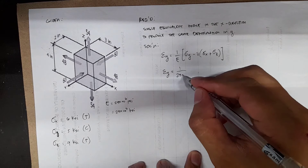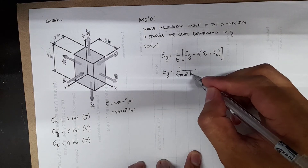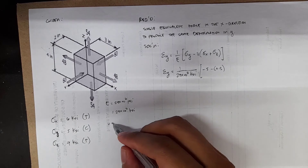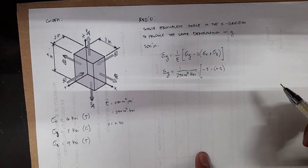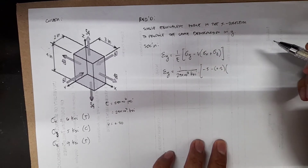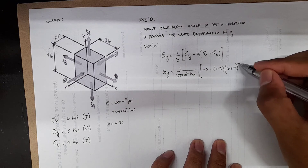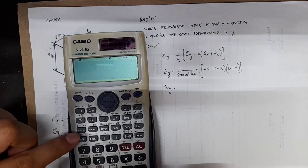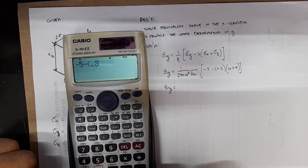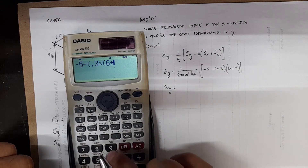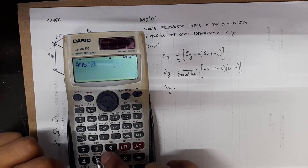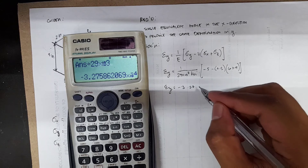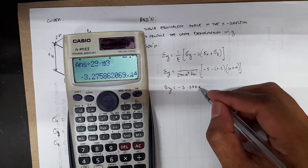So you have 1 over 29 times 10 to the 3 ksi. Stress y is negative 5, minus 0.3 — the Poisson's ratio v is 0.3 from our earlier computations — times stress x of positive 6 plus positive 9. So the strain y equals (negative 5 minus 0.3 times 15) divided by 29 times 10 to the 3, which gives negative 3.276 times 10 to the negative 4.